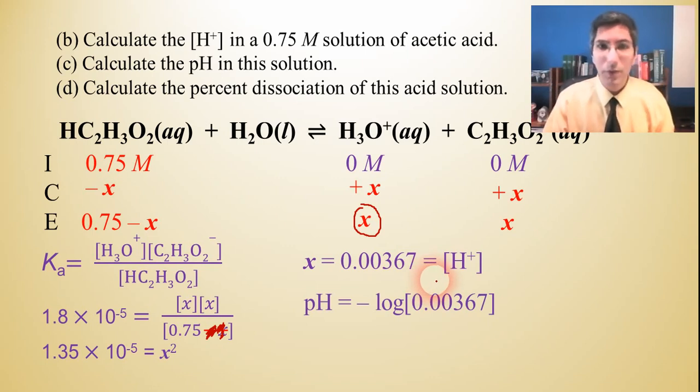So now to find the pH, we just take the negative log of the H plus. So when we plug that into our calculator, we should get an answer of about 2.43.